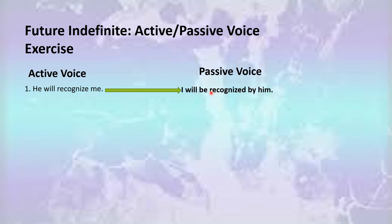Following those four rules: number one, change the position of subject and object; number two, use 'will be' or 'shall be'; number three, use the third form of the verb along with 'by'; and number four, change the pronoun. So 'me' becomes 'I' and 'he' becomes 'him', giving us 'I will be recognized by him.'